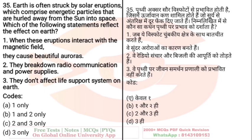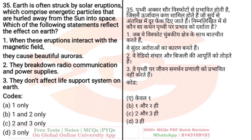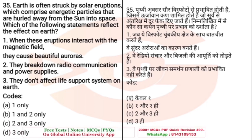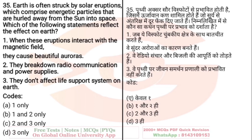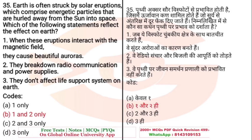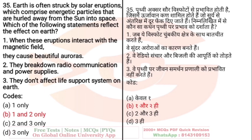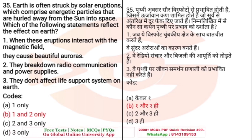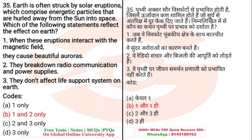Regarding solar storms: They break down radio communication and power supplies. The statement 'They don't affect life support systems on Earth' is wrong. The right answer is the first and second — meaning they do break down radio communication and power supplies.